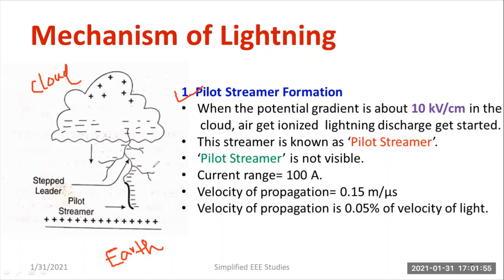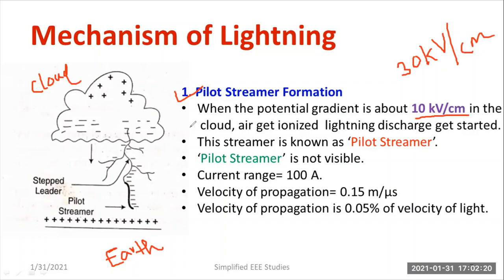If the potential gradient is above 10 kV per centimeter, ionization of air will take place — that is, dielectric breakdown of air will occur. Under standard temperature and pressure conditions, the breakdown value is 30 kV per centimeter, but because of moisture content it takes place earlier. The air gets ionized and the lightning discharge slowly gets started.